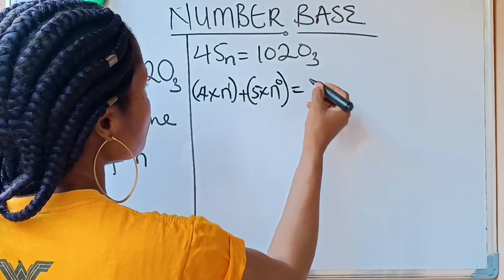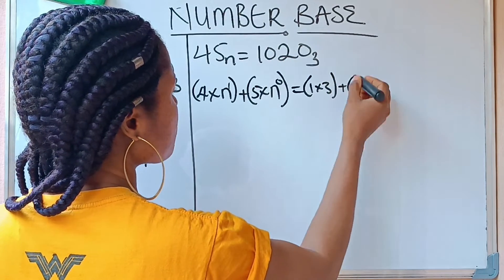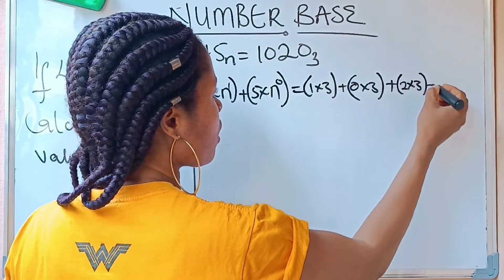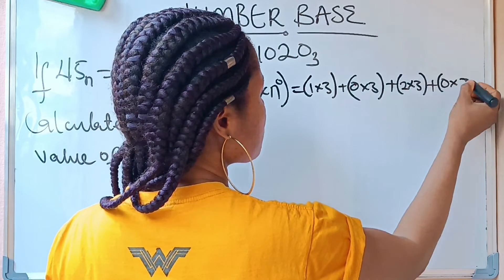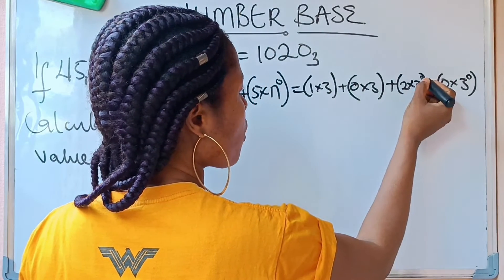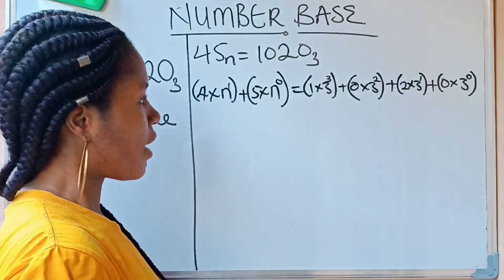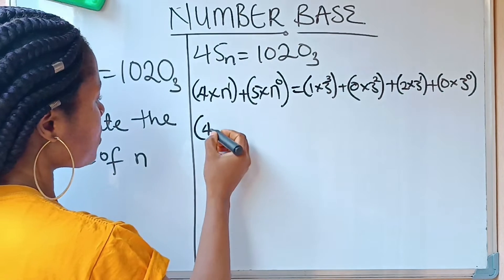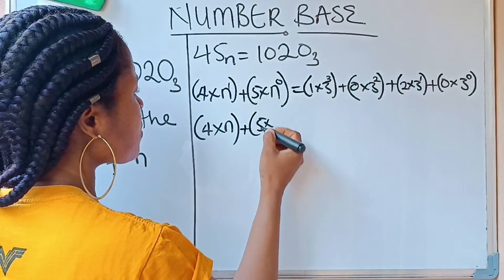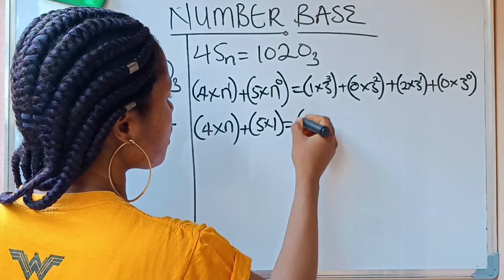For 1020 in base 3, we write: 1 times 3, plus 0 times 3, plus 2 times 3, plus 0 times 3. Then we assign powers of 3 from the right starting at 0: 3 to the power of 0, 3 to the power of 1, 3 to the power of 2, 3 to the power of 3. So the left side becomes 4n raised to the power of 1, which is 4n, plus 5 times n raised to the power of 0, which is 5 times 1, giving 5.